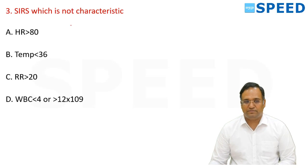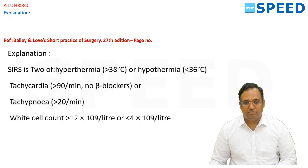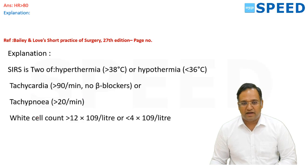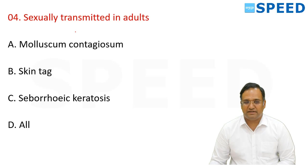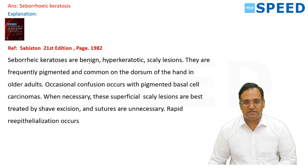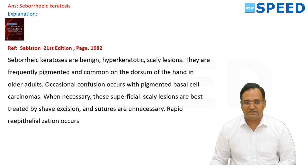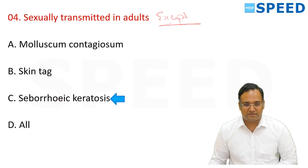For SIRS, the answer is heart rate, which must be more than 90. SIRS requires 2 of: hyperthermia >38°C or hypothermia <36°C, tachycardia >90 (no beta blocker), tachypnea >20 per minute, and WBC >12×10⁹/L or <4×10⁹/L. Regarding sexually transmitted disease in adults, the answer is seborrheic keratosis — a benign hyperkeratotic scaly lesion, frequently pigmented, common in older adults, best treated by shave excision; rapid re-epithelization occurs.